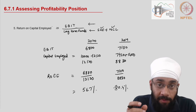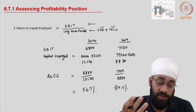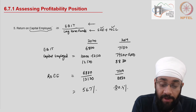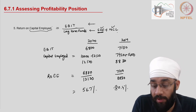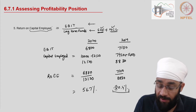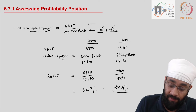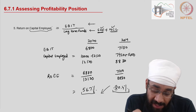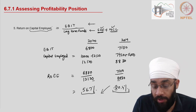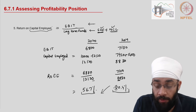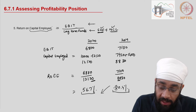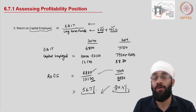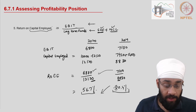The business was generating an eighty percent return on capital employed in 2019 using funds from shareholders and lenders, which has now come down to only fifty-six percent in 2020. The total capital also went up significantly by around fifty percent, but the return has come down — both factors contributing to the decline in this ratio.